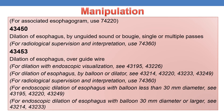Coming to manipulation and other procedures — first, manipulation. For an associated esophagogram, use 74220. Whenever an esophagogram is part of manipulation, use 74220. The first CPT under manipulation is 43450 — dilation of esophagus by unguided sound or bougie, single or multiple passes. For radiological supervision and interpretation, use 74360. The next CPT is 43453 — dilation of esophagus over guide wire.